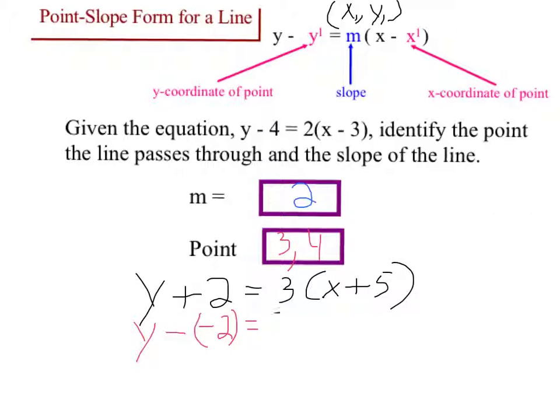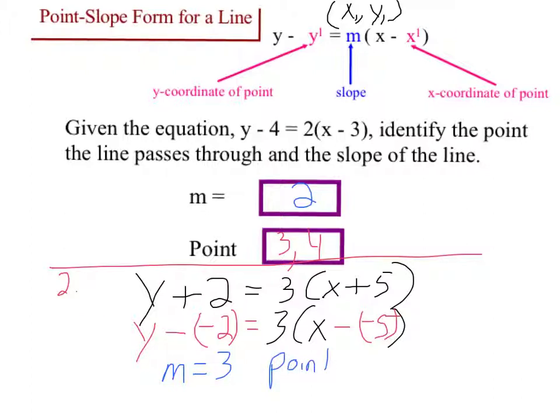So you need to keep that in mind. The 3 stays the same, but x minus negative 5. So if I'm doing this as my second example, my slope is going to be 3. So that's not a big deal. My slope is 3, that's no problem. But my point is not (5, 2). So be very careful. It's not (5, 2). It's (-5, -2) because of the formula and keep, change, change, okay?